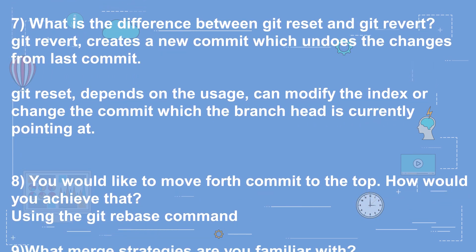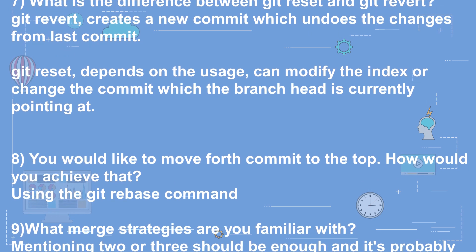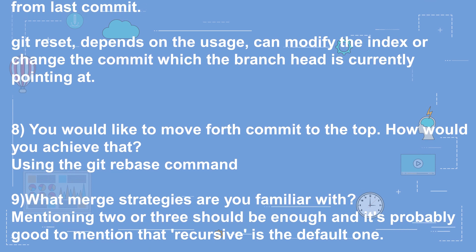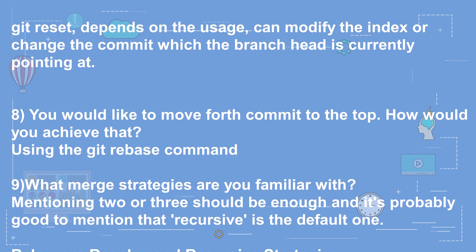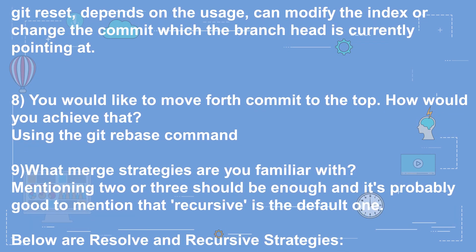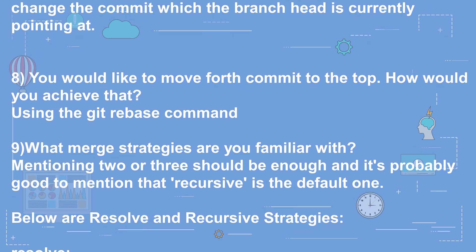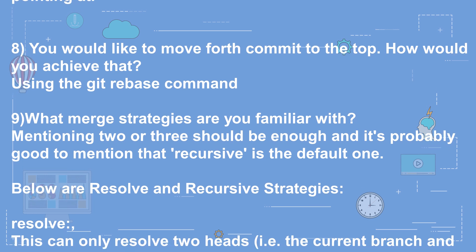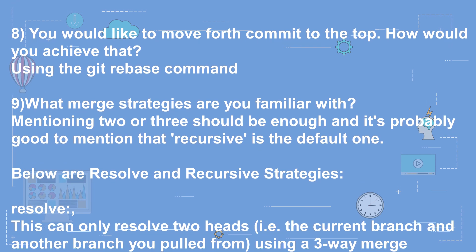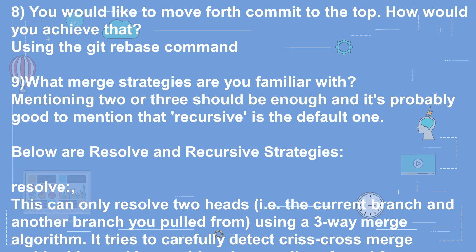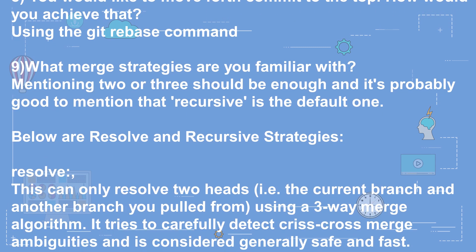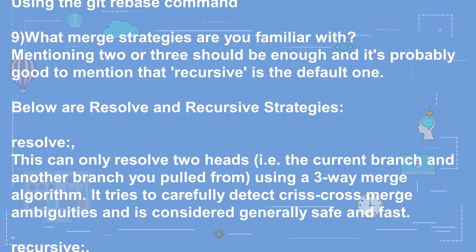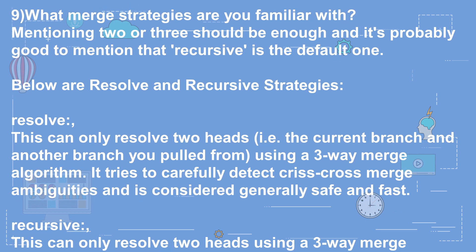Question 9: What merge strategies are you familiar with? Mentioning two or three should be enough, and it's good to mention that recursive is the default. Two strategies are: Resolve — this can only resolve two heads, i.e., the current branch and another branch you pulled from, using a three-way merge algorithm. It tries to carefully detect crisscross merge ambiguities and is considered generally safe and fast.